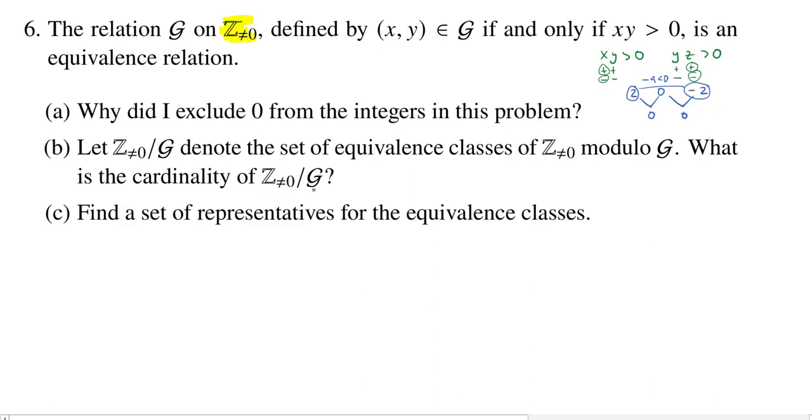So we're going to have to explore what happens when we apply this equivalence relation to the nonzero integers. And in some sense, we already have up here. We know that if two elements are going to be related, then they need to have the same sign. And of course, if they do have the same sign, then they will be related.